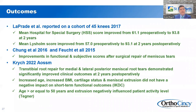Regarding outcomes: HSS scores are significantly improved post-operatively — for example, from 61.1 preoperatively to 93.8 at two years. Lysholm scores are significantly improved as well. A 2015 study showed improvement in functional and subjective scores after surgical repair. Transcibial root repair for medial meniscal root tears demonstrated significantly improved clinical outcomes at two years. Increased age, BMI, cartilage status, and meniscal extrusion did not negatively impact short-term functional outcome, though age 50 or above and extrusion did negatively impact patient activity level as measured by Tegner scores.